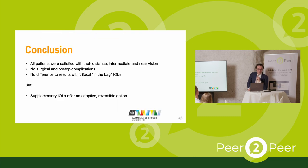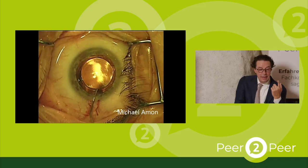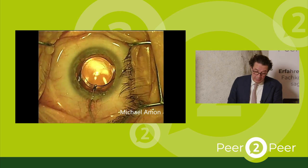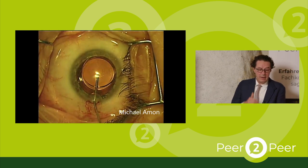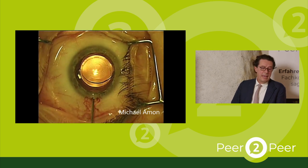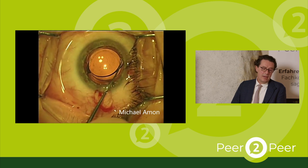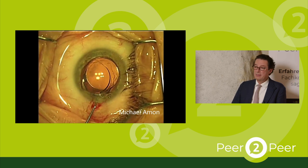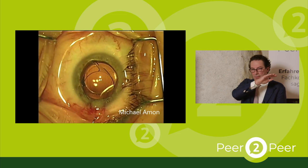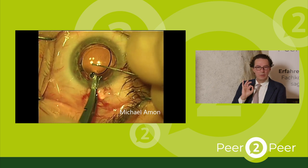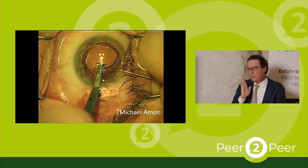In conclusion of that study: all patients were satisfied, there were no surgical complications, and there is no difference in results compared to the trifocal in-the-bag lens. But supplementary is a reversible option — that's the big difference. Explantation is demonstrated: with a hook I bring out one haptic through the 2.5mm wound, grasp the optic with implantation forceps, and extract it. You don't have to cut or fold it because it's soft, thin, and zero diopters. It's an almost reversible procedure.